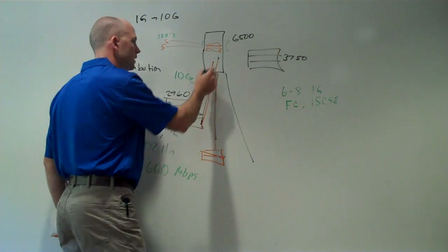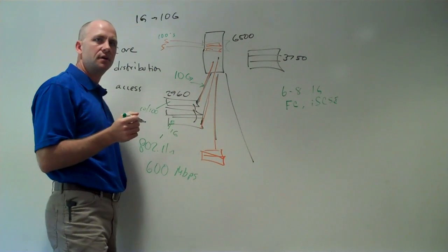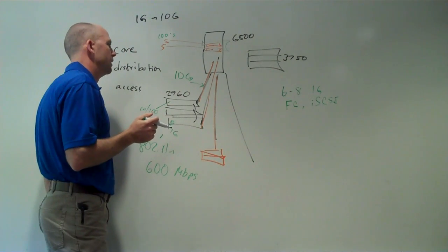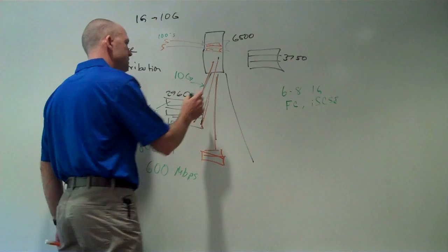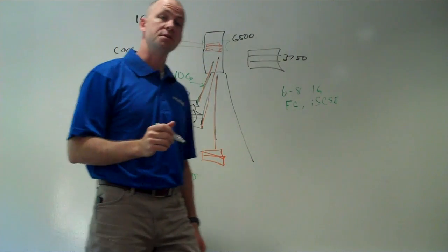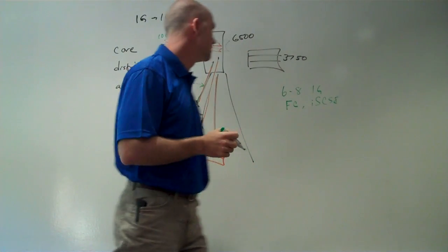A lot of the closet things tend to be multimode fiber. And 10GB doesn't work over multimode fiber, at least not very far. And so in a lot of these cases, we've got to look at re-pulling some of that fiber with single-mode fiber. So make sure you work that into your costs.